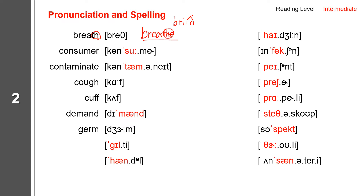Next one: guilty. Guilty spells G-U-I-L-T-Y. Guilty — it is like the word build spells B-U-I-L-D. Guilty. And next one: handle. Handle spells H-A-N-D-L-E. Handle.